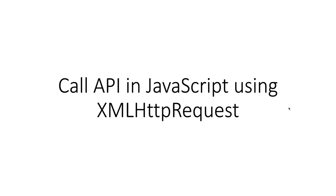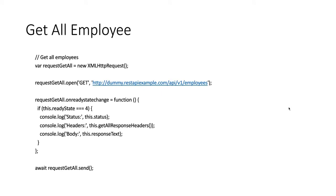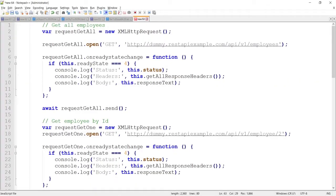Hello guys, today in this video I am going to talk about how we can call APIs in JavaScript using XMLHttpRequest. The first thing we will do is call an API to get all employees. Here you can see the sample code I am going to use to call the API — it is a GET method and this is the API URL.